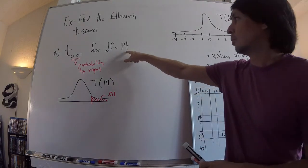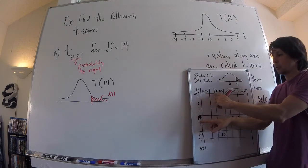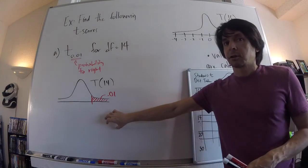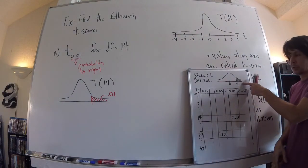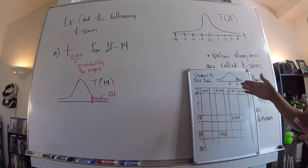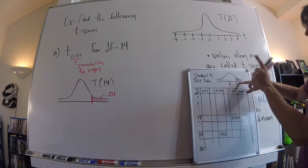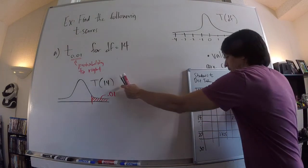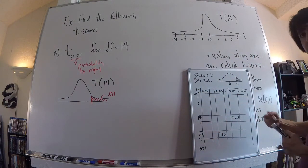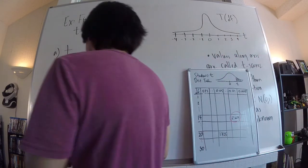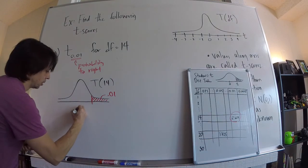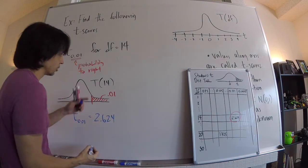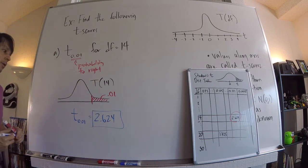For this problem we look under DF = 14. The probabilities on the top row are the area to the right — key thing: inverse T on your calculator takes the area to the left, but the table uses the area to the right. So we find the column for 0.01, which is the second to last column, then go down to row DF = 14, and we find 2.624. Your answer is T_0.01 = 2.624, at least for DF = 14.